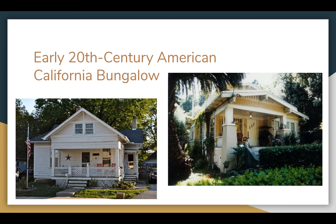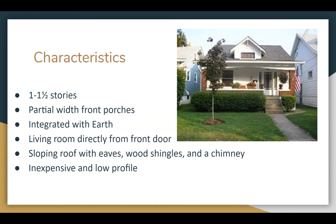The early 20th century American California bungalow is similar to the bungalow but more California-based. It usually has one-and-a-half stories with an attic on top, and partial-width front porches — though sometimes it goes all the way across. It was integrated with the earth, using natural colors like browns, with wood and brick. The interior typically has a living room, a separate dining room, and a smaller kitchen, with the fireplace as the focal point of the living room.